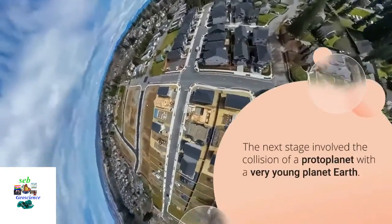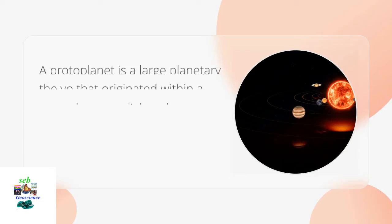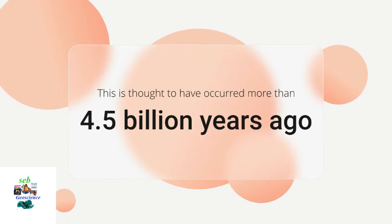The next stage involved the collision of a protoplanet with a very young planet Earth. A protoplanet is a large planetary embryo that originated within a protoplanetary disk and has undergone internal melting to produce a differentiated interior. This is thought to have occurred more than 4.5 billion years ago.